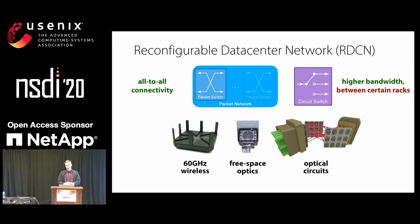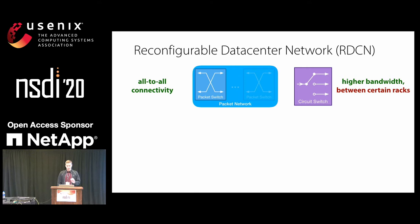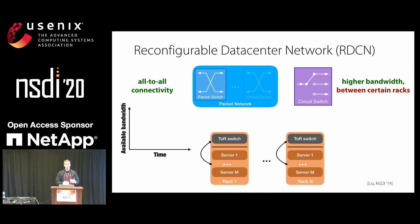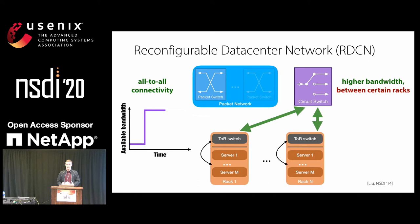Let's look at what the available bandwidth looks like from a rack point of view over time. Each rack has a top-of-rack switch which can connect to either the packet network or the circuit network. When the packet network is in use, the bandwidth is relatively low. When the network scheduler decides that a circuit will be allocated between these two racks, their available bandwidth increases to be 8 or 10x higher, and then shortly drops again once the circuit is torn down.